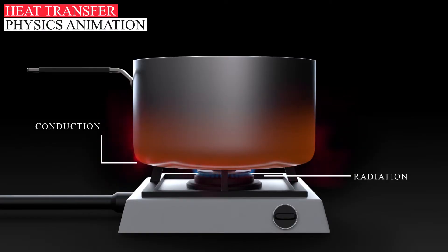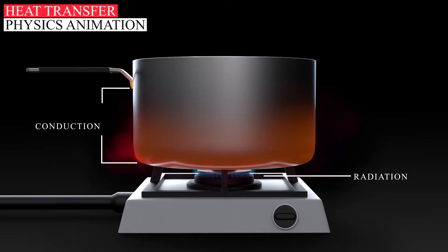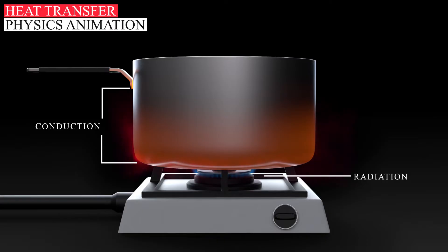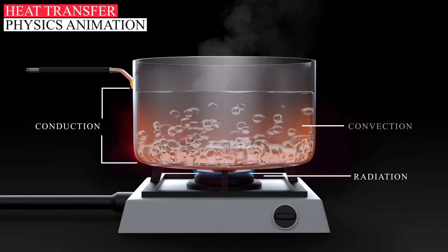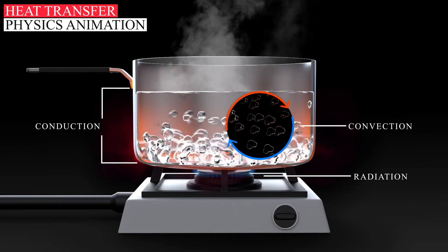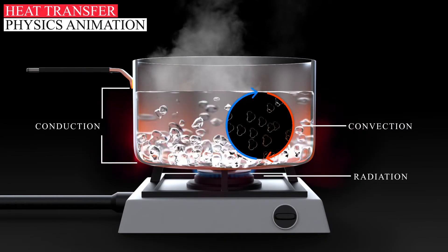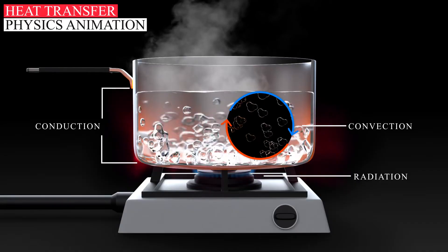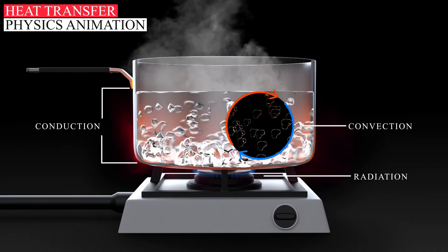Conduction takes place with the transfer of heat from the burner to the metal pan. This heat transfer is also responsible for making the handle hot after a period of time. The water is heated by the process of convection, which is a circular movement caused by heated water rising and cold water falling.